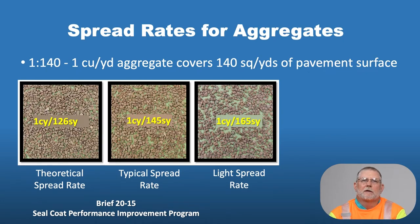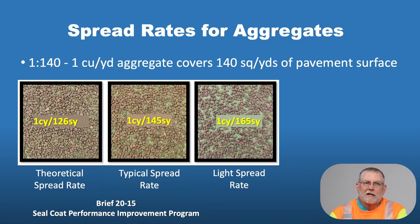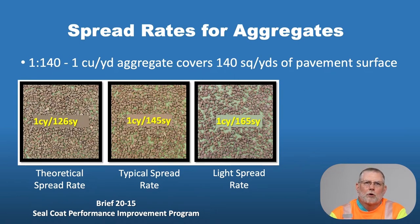We're going to look at some spread rates for a few different aggregates. Here we have three different spread rates of the same aggregate — a grade four rock. The first picture shows a theoretical or design spread rate, set at one cubic yard to 126 square yards as determined on the board test. The middle picture shows a typical spread rate — probably what you'll want in the field, with some voids but very good coverage. The last picture shows a spread rate of one cubic yard to 165 square yards, which is obviously too light.